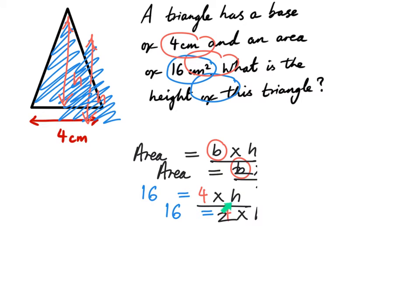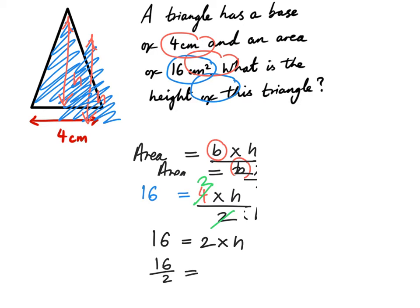Here we have an equation where 4 times h, divided by 2 is equal to 16. Let's simplify this. 4 divided by 2 is equal to 2, so this simplifies to 16 equals 2 times h. Therefore, 2 times h is equal to 16, so h has to be 8. We've worked out the height of this triangle to be 8 centimetres.